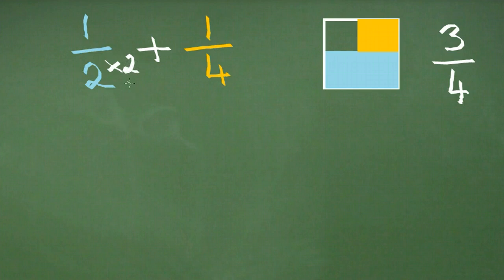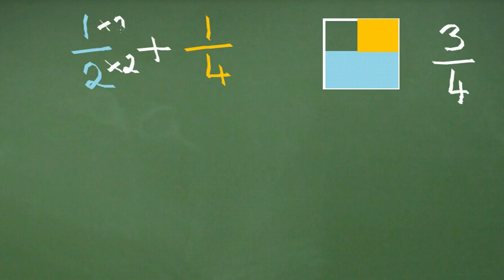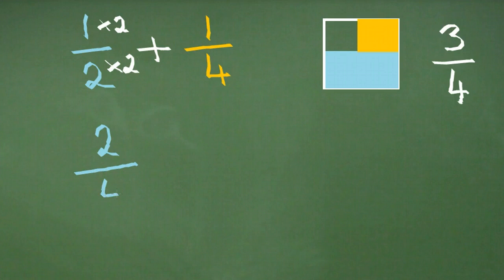The rule with fractions is whatever we do to the denominator on the bottom, we must always do to the numerator on top. So we must also times the one on top by two. Completing this side of the calculation: one times two on the top gives us two, and two times two on the bottom gives us four. Then we add that to the other side of the calculation, which is our quarter.